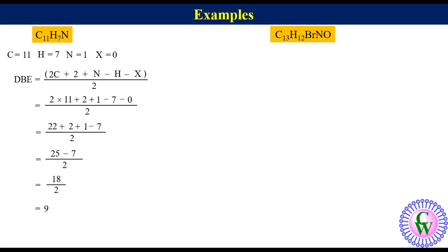Let's have another example, C13H12BrNO. Here C is equal to 13, H is equal to 12, N is equal to 1 and X is equal to 1.